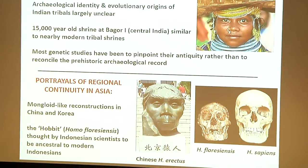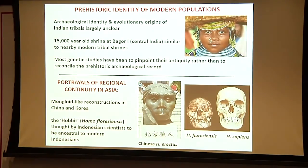Looking at the prehistoric identity of modern populations: how does it impact how we view and treat modern populations, especially tribal groups? There's identity and evolutionary origins based on genetic studies, but there are many gaps — many tribes have not been properly sampled. There is some continuity in the archaeology, such as a 15,000-year-old shrine matching modern shrines built by tribal groups. In Asia generally, there are different portrayals of regional continuity rather than just population replacement, with reconstructions linking ancient populations to modern ones based on certain anatomical features.